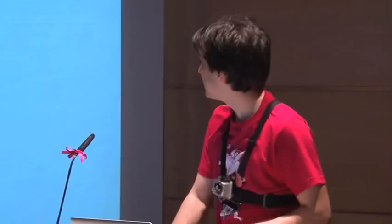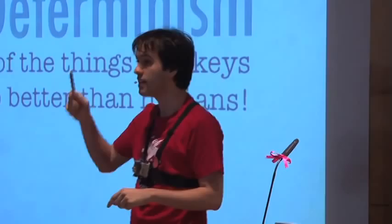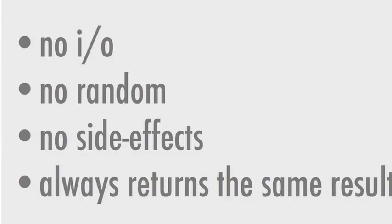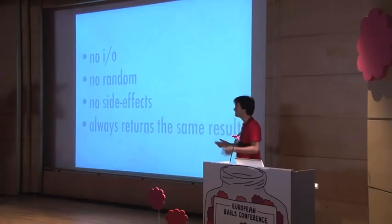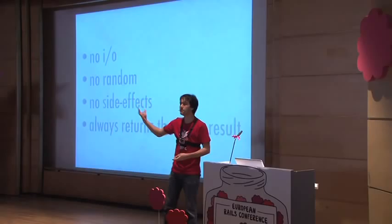What is important in this model is that everything is deterministic. Every time I call a function with the same argument, I get the same result back. If everything is deterministic, it means we can't have IO — when I call standard input get and try to get something from the input, every time I call it I get something different. I can't do random either, because every time I call random I get a different result. We say there are no side effects; I should not be able to call a function that changes something in my system.